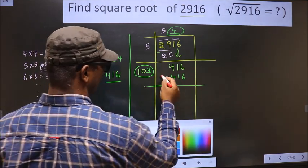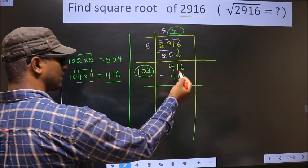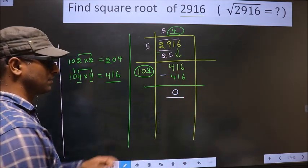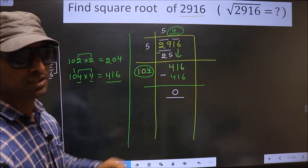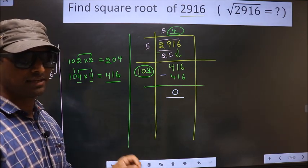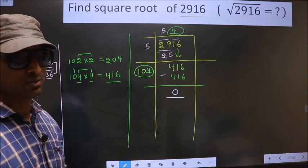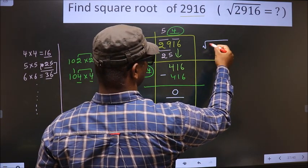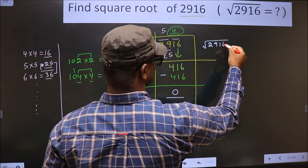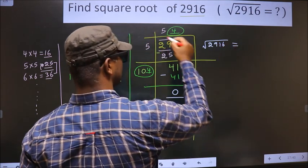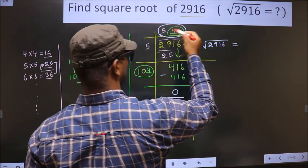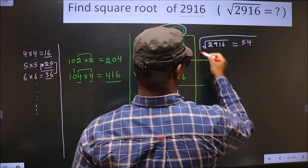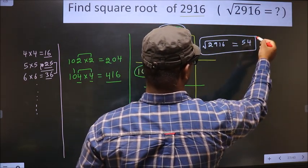Now we subtract: 416 minus 416 gives 0. We got 0, which means the given number is a perfect square and the square root of 2916 is 54. So this is our answer.